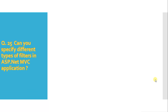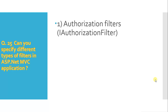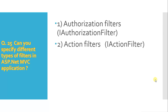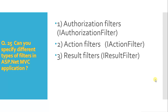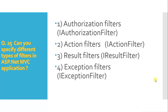Question 21: can you specify different types of filters in an ASP.NET MVC application? Yes — first is the authorization filter using IAuthorizationFilter interface, second is the action filter using IActionFilter, third is the result filter using IResultFilter, and fourth is the exception filter using IExceptionFilter.